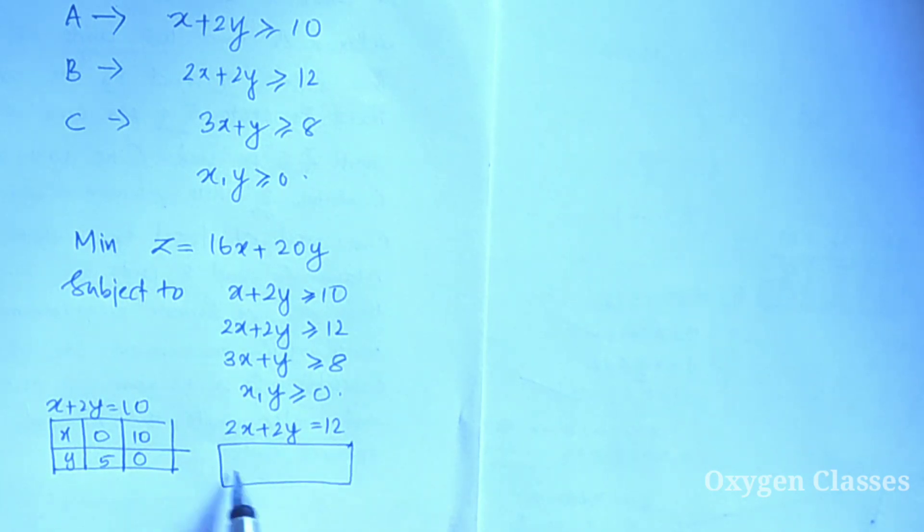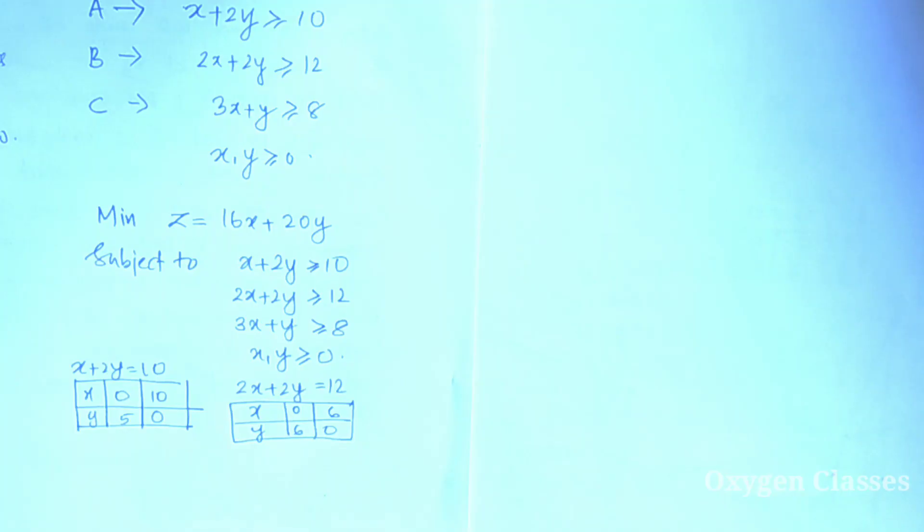Third line: 3X plus Y which is equal to 8. If X is 0, Y is 8. If Y is 0, X is 8 by 3, which is 2.66.